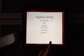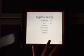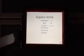Algebra terms include coefficients, which are the numbers multiplied by the letter, and terms are groups of numbers and letters together. Equations are terms with equal signs in them.